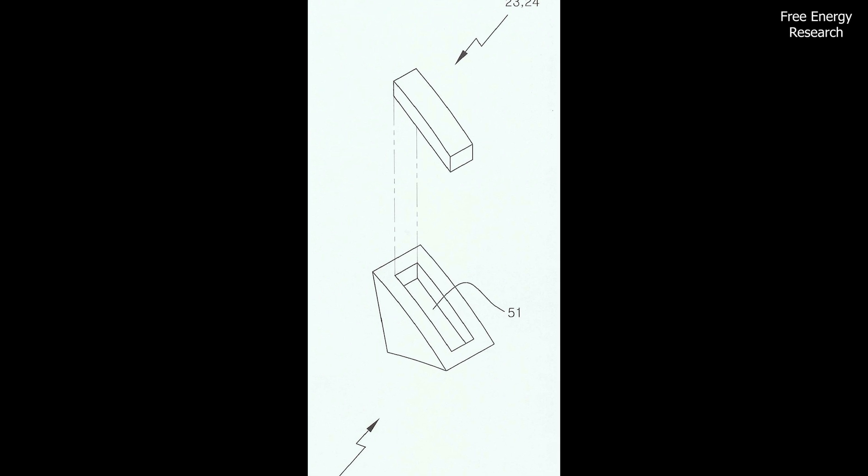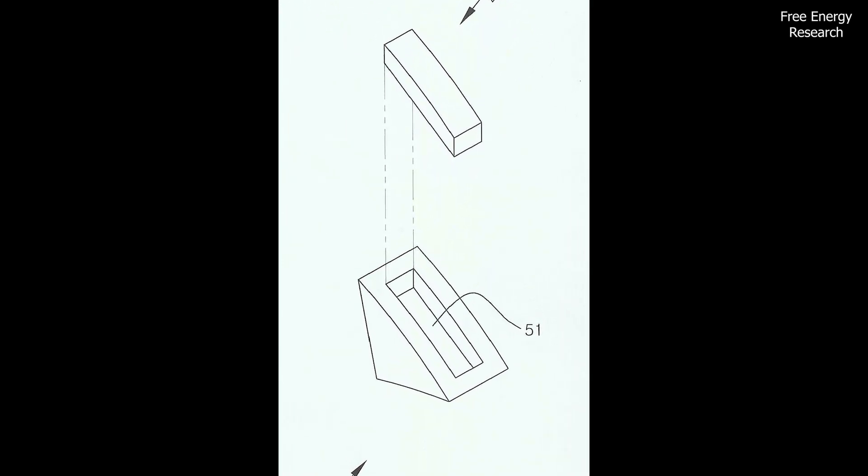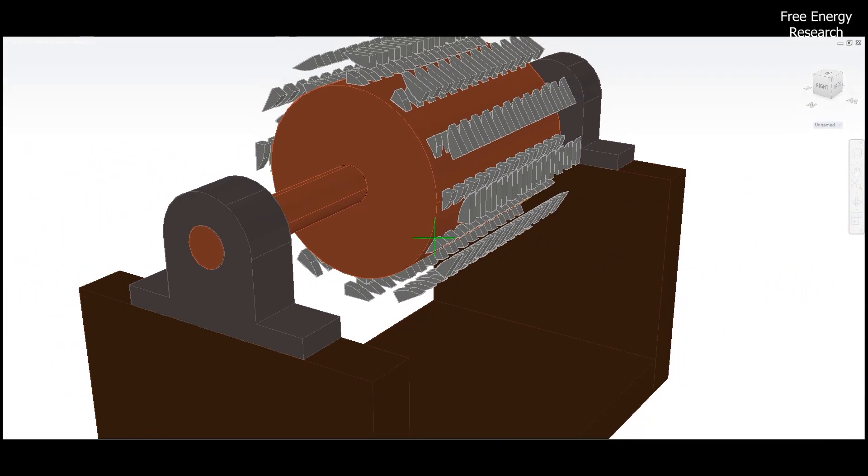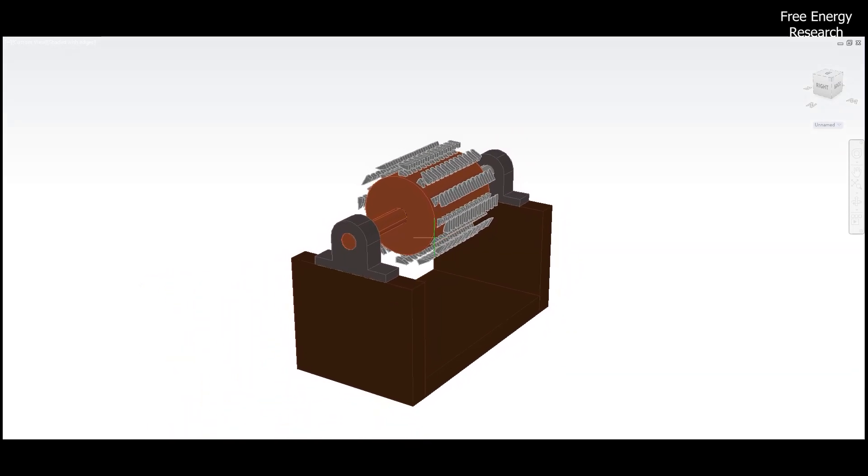To further enhance stability, clamps made of non-magnetic materials are employed. These clamps, fixed to the outer surface of the rotor, ensure that the magnetic bodies remain securely in place, minimizing the risk of dislodgement.